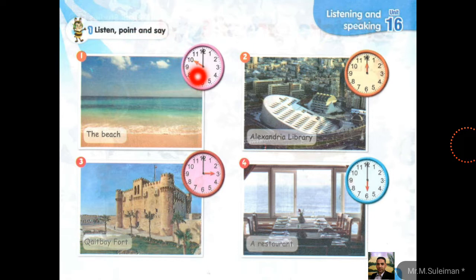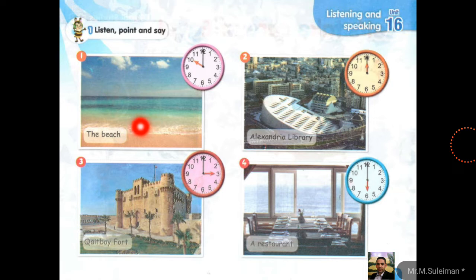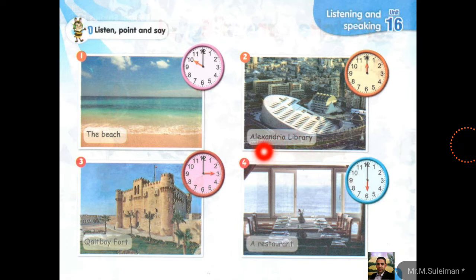Listen, point and say. What time is it? It's ten o'clock. Let's visit the beach. Excellent! What is the beach? The beach. Number two: what time is it? It's 12. What is it? It's the Alexandria Library. Look — Alexandria Library.